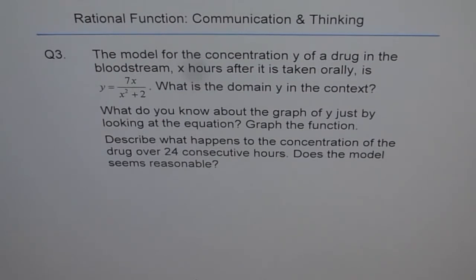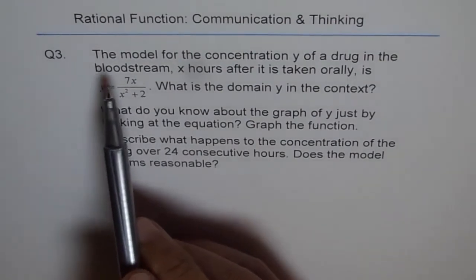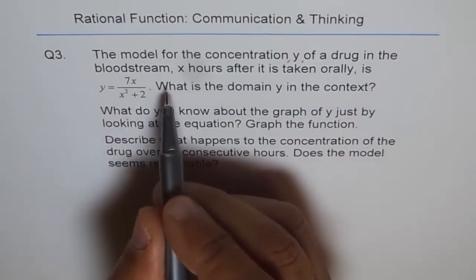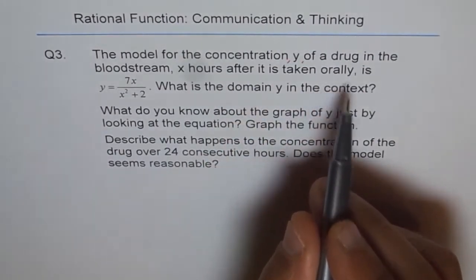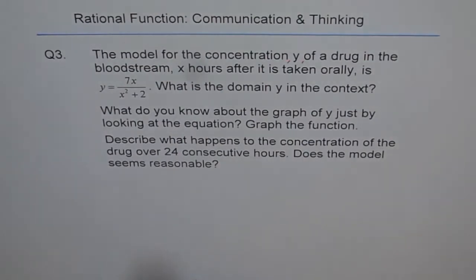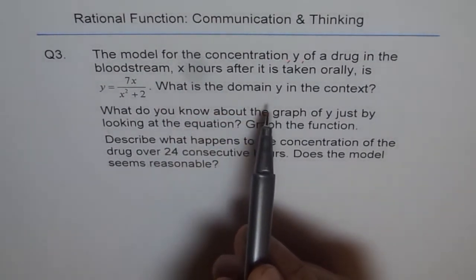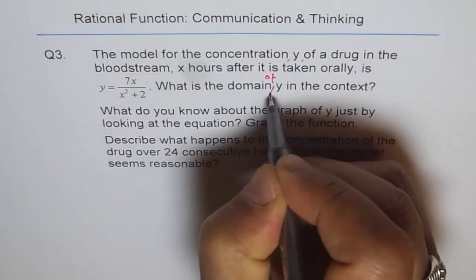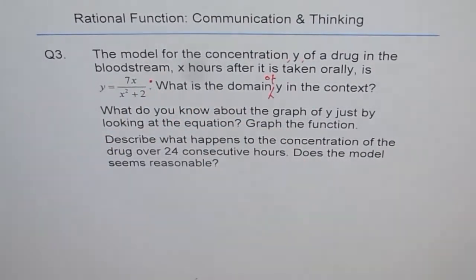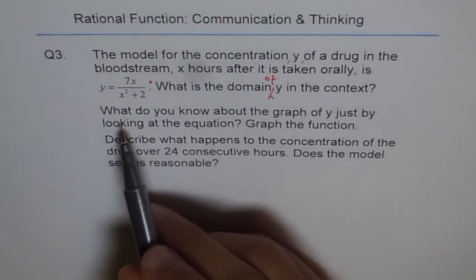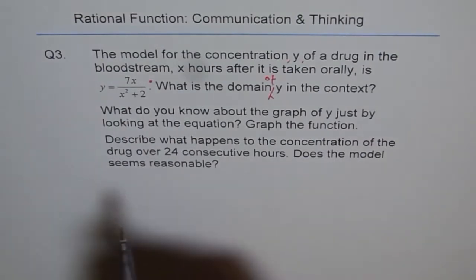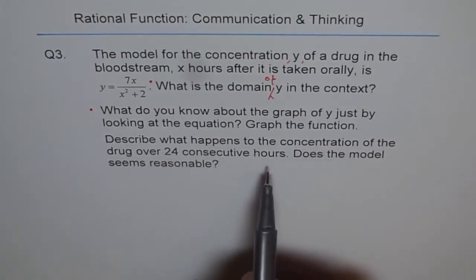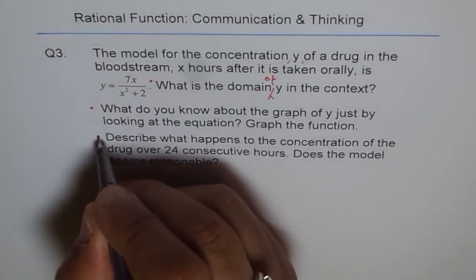So this question has really three parts. First, what is the domain of y in this context? Second, what do you know about the graph of y just by looking at the equation? And third, describe what happens to the concentration of drug over 24 consecutive hours. Does the model seem reasonable? These are different parts of the same question. It is a very important question. I have seen it so many times in the test.